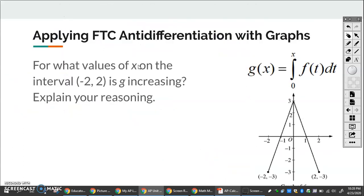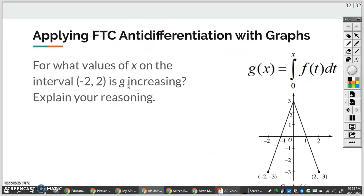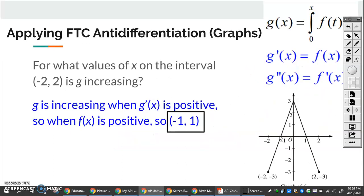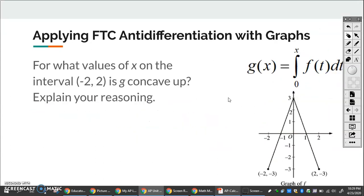For what values of X on the interval is G increasing? So G would be increasing. G is increasing when G prime is positive. And G prime is just F. So I want to know when F is positive. So when this graph is above the X axis. So between negative one and one.